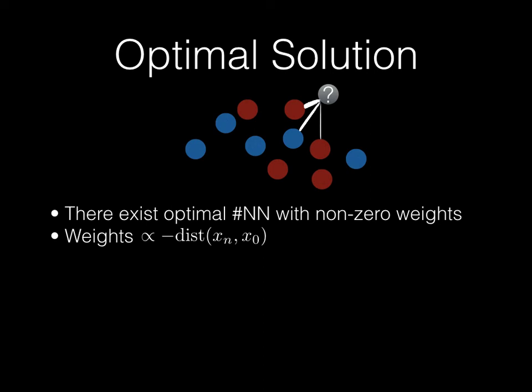We show that for the optimal solution, there exists an optimal number of neighbors with non-zero weights. We also show that the optimal weights are proportional to the negative of the distance between the train points and the test point.